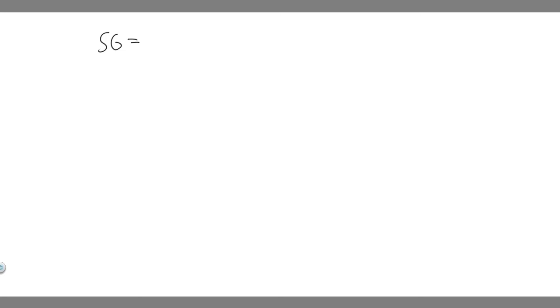So what we're trying to do is find specific gravity. In order to do this, you should know what it is first. Specific gravity — I'm just going to call it Sg — is essentially the ratio of the density of a material to the density of water at four degrees Celsius. So it's the density of our fluid, rho sub f, over the density of water, rho sub W. This is what we need to find.